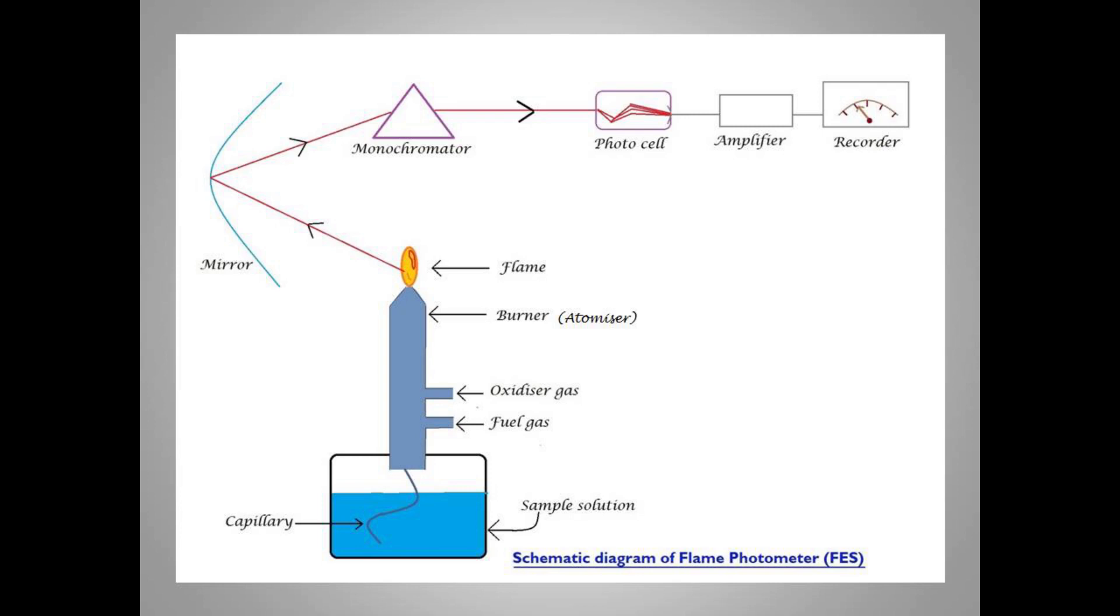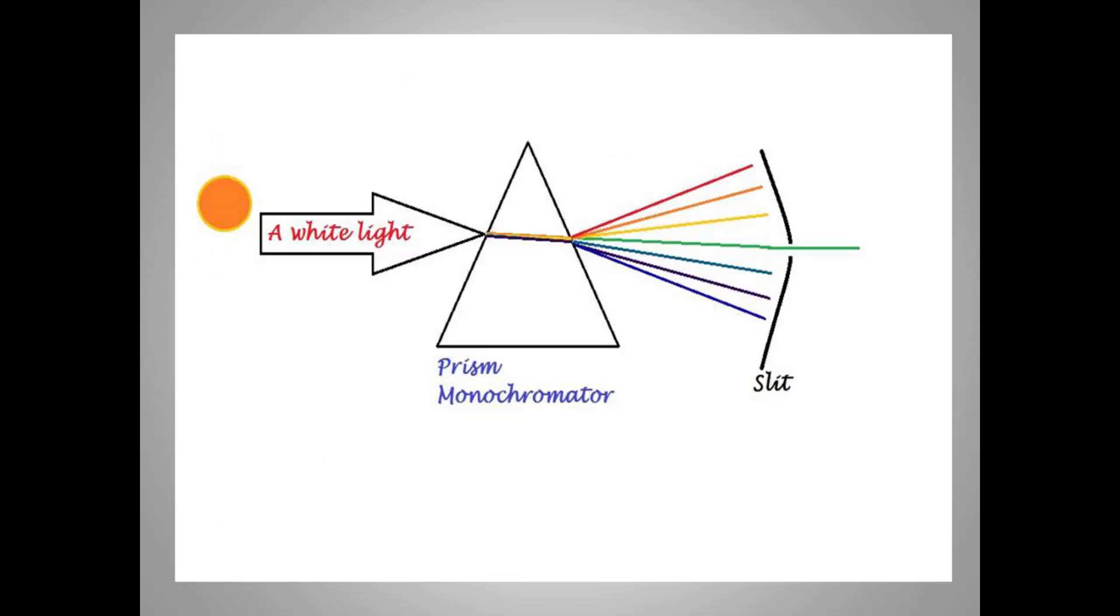Coming back to the instrumentation: In the burner, when the sample gets atomized and starts emitting light, the light falls onto the mirror, which is reflected back to the monochromator. The monochromator is also known as the filter. As seen in the diagram, these monochromators are capable of resolving light into its component, through which they are able to filter unwanted light radios. Here, in flame emission spectroscopy, the purpose of using filters is to allow only the characteristic radiation coming from the sample and filter off the unwanted light.